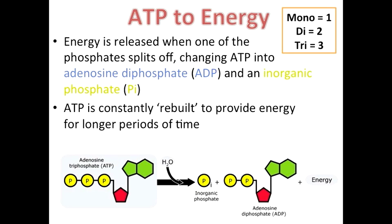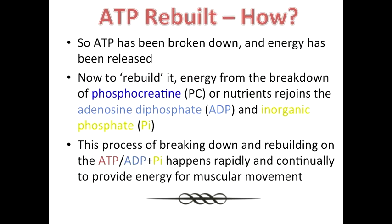ATP is constantly rebuilt to provide energy, as shown by the diagram. This rebuilding occurs when energy from the breakdown of phosphocreatine, PC, or nutrients, rejoins with ADP and inorganic phosphate. This process happens constantly to provide energy for muscular movement and for physical activity.